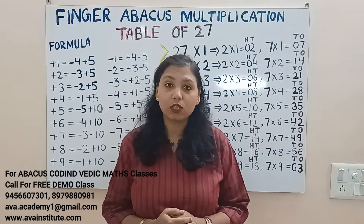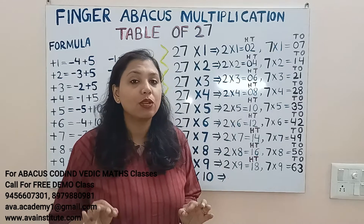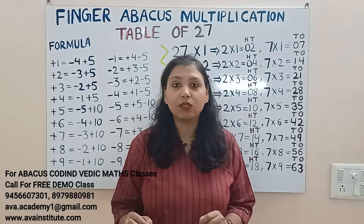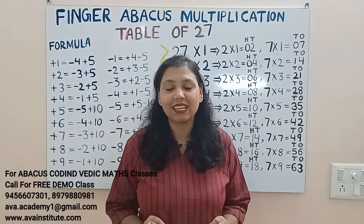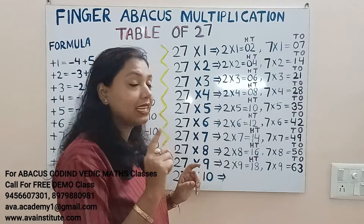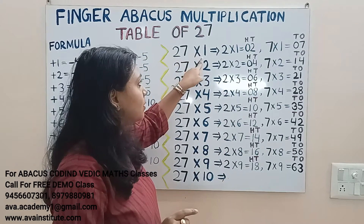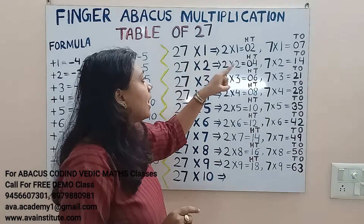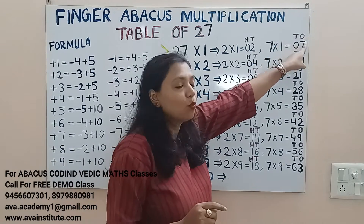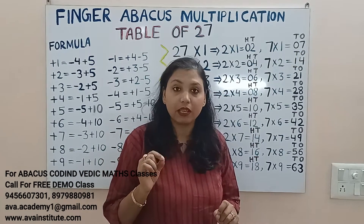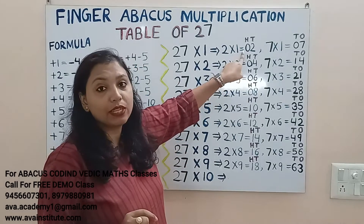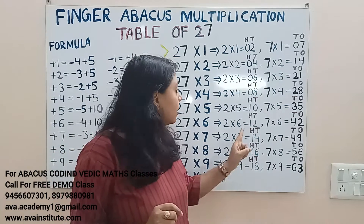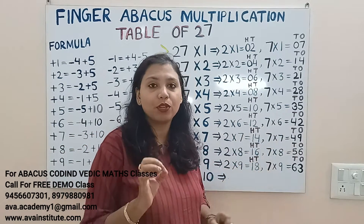Let us quickly revise the multiplication rules. The first rule is you have to learn the table up to 9. If you have learned the table up to 9, then up to 99 you can do the table without learning, and that too within seconds. The second rule is you have to multiply the first number and keep the answer in hundreds and tens. Then you have to multiply the second number and keep the answer in tens and ones.